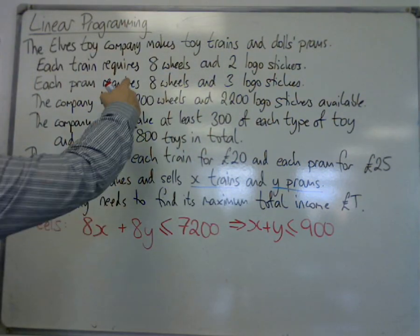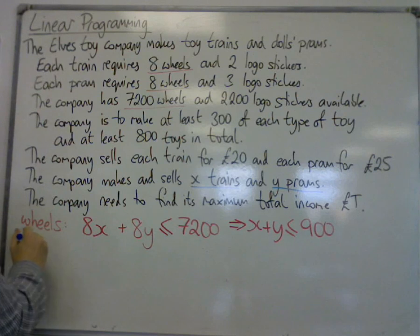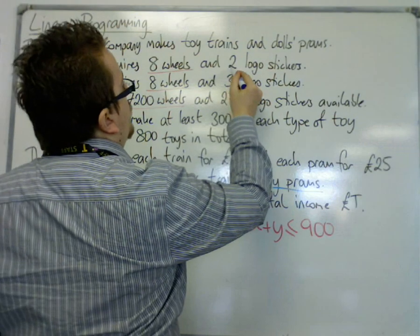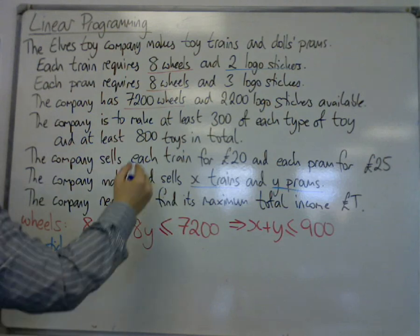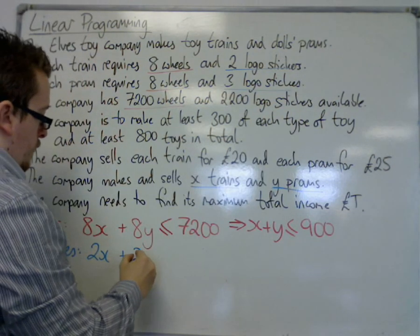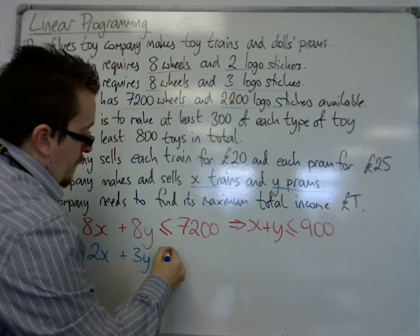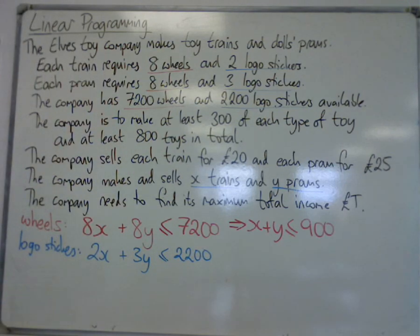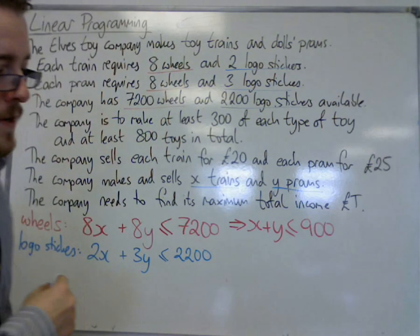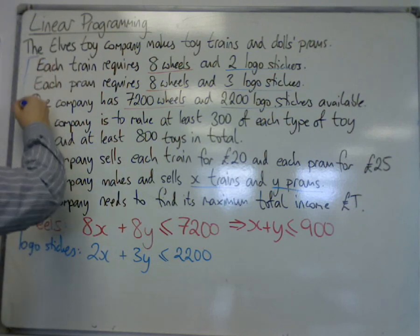Because we've got one for wheels, we've also got one for logo stickers. This time we've got two logo stickers for each train and three logo stickers for each pram, and we have 2,200 logo stickers available, so we can't go anywhere above 2,200. That's our second inequality, and this one can't be simplified down. So that's used up these first three sentences.